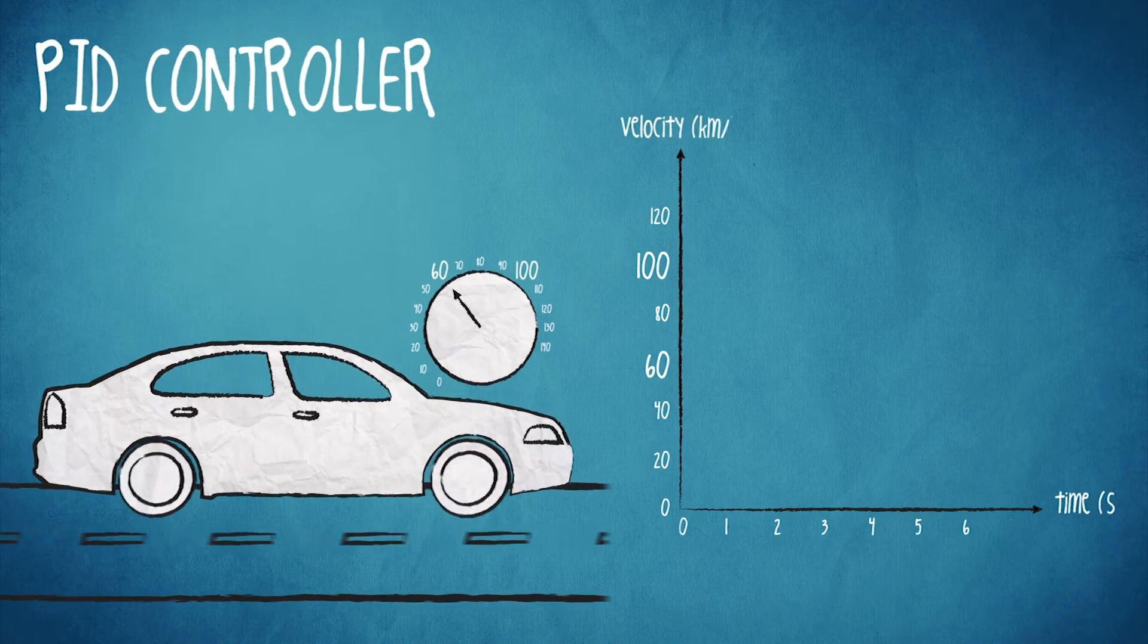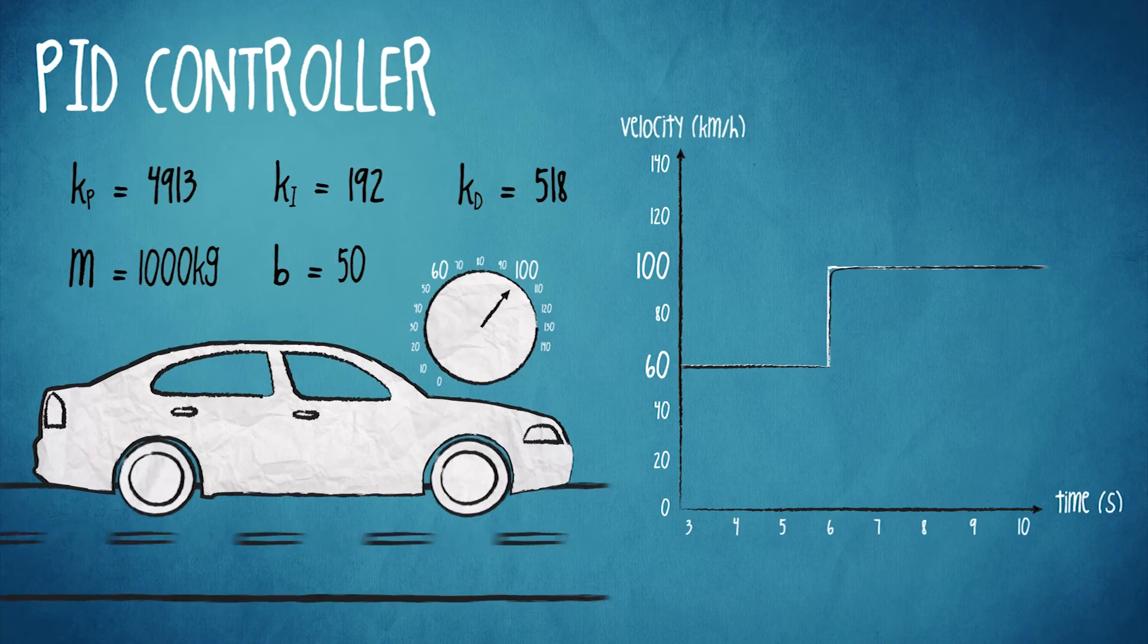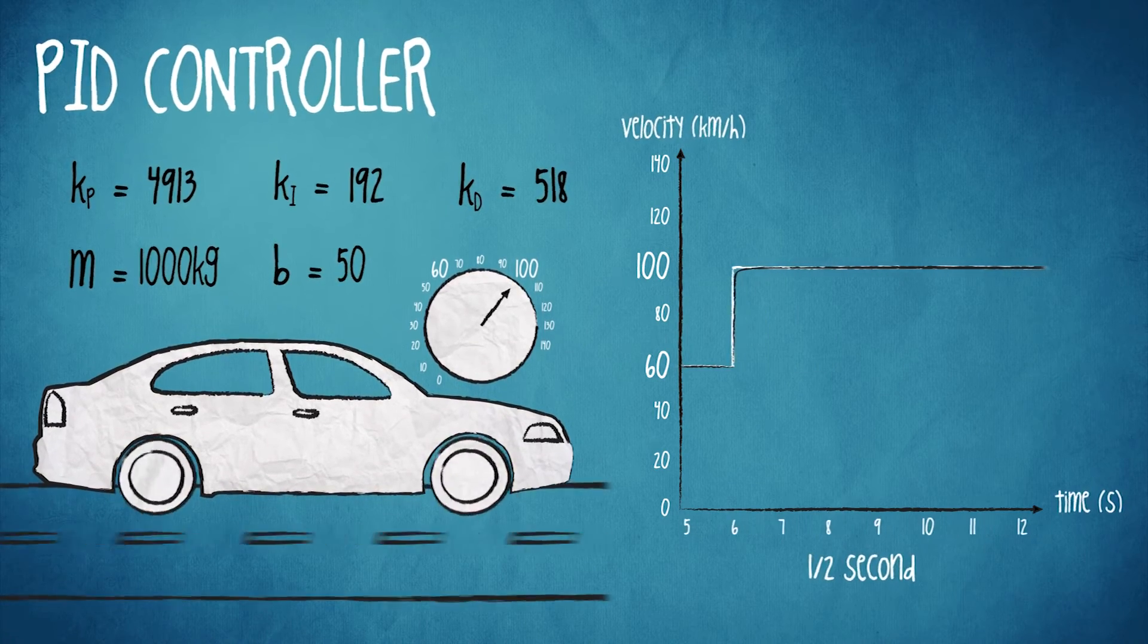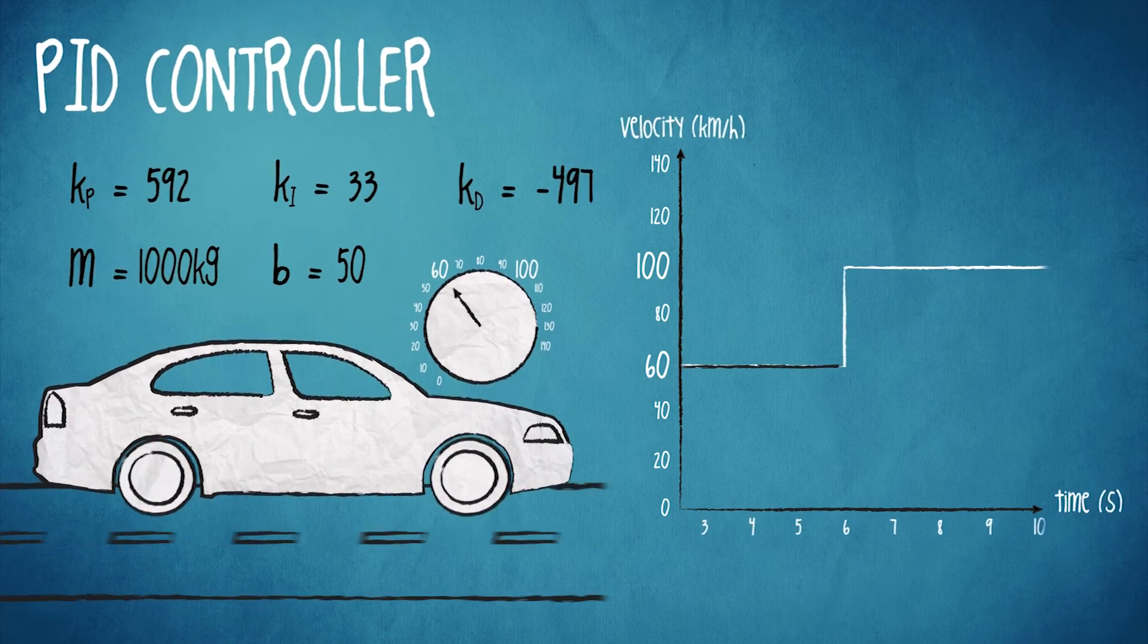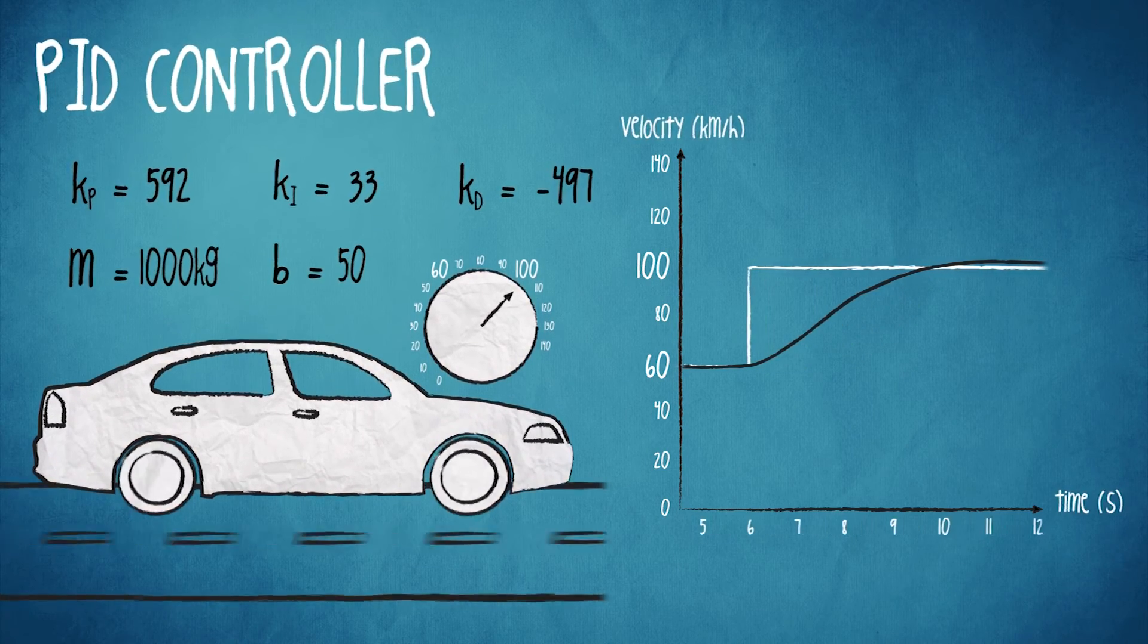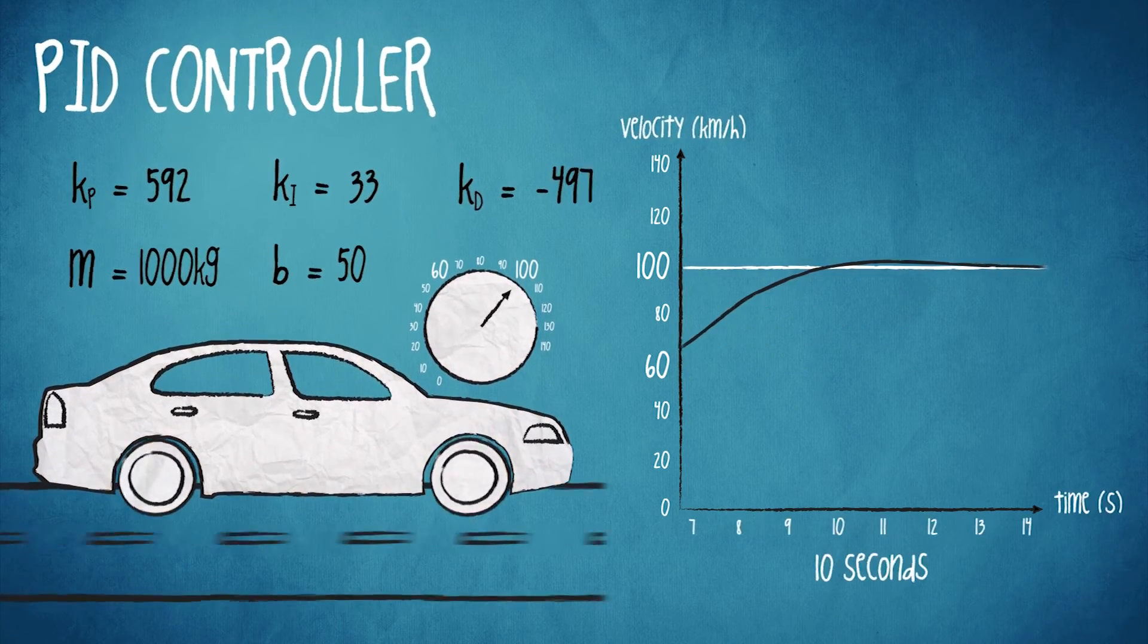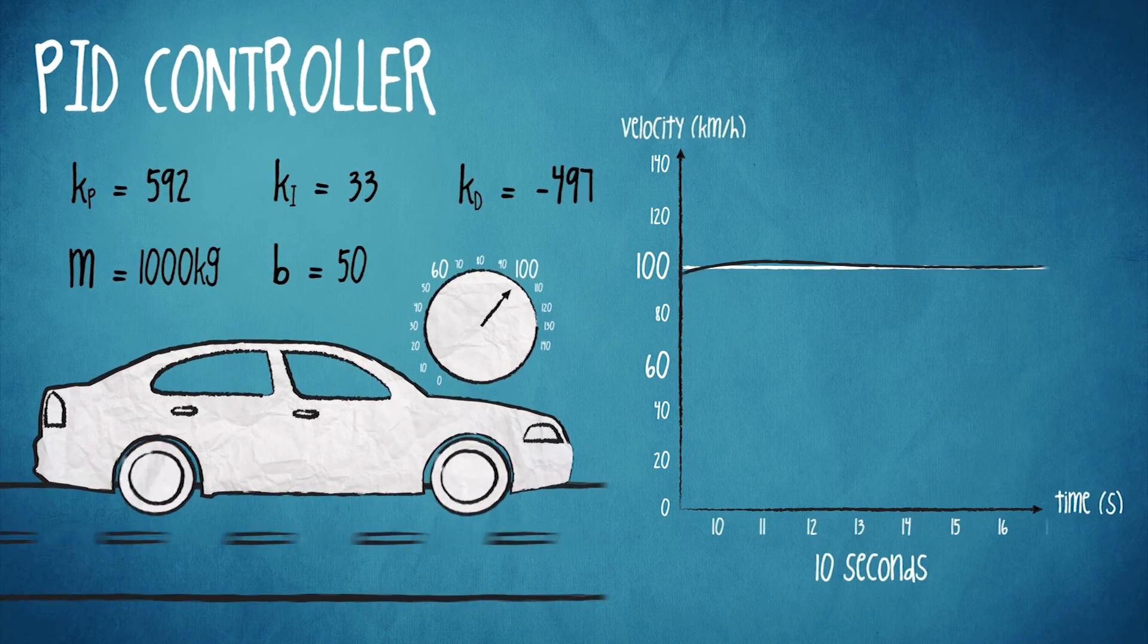So for these values the car accelerates to the desired speed but far too quickly. Half a second is unrealistic for most cars. Whereas in this case with some more conservative tuning the car goes from 60 kilometers per hour to 100 kilometers per hour in 10 seconds which is much more reasonable.